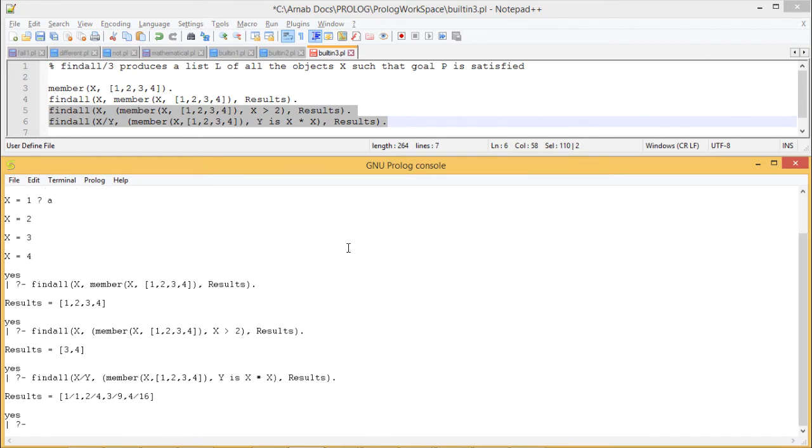Here you see, if we execute this one, then we are taking only those values for X which is greater than 2. That's why here we are putting one and condition. As a result of that, Result is coming not with 1 and 2, but with 3 and 4 only. 3 and 4 as they are greater than 2, so these elements have got included in the result list.